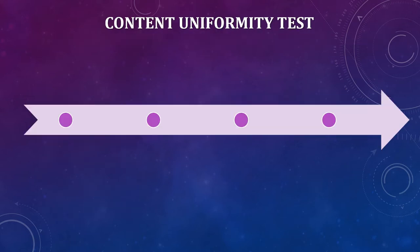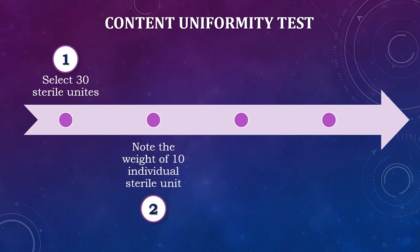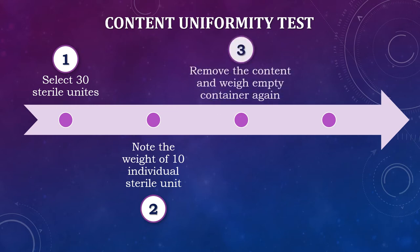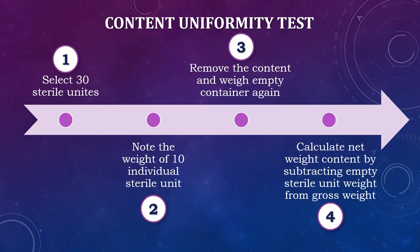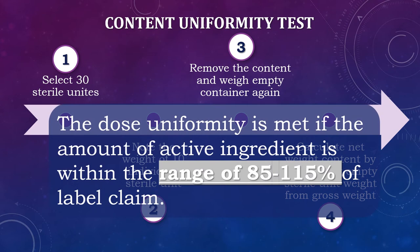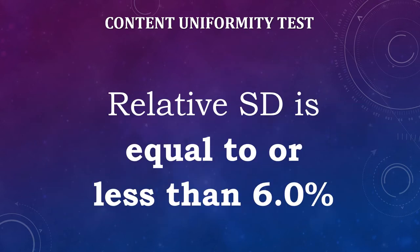The first test is the content uniformity test. A total of 30 sterile units are selected from each batch. The weight of 10 individual sterile units is noted, and the content is removed from them. The empty individual sterile unit is weighed accurately again. The net weight is calculated by subtracting the empty sterile unit weight from the gross weight. Dose uniformity is met if the amount of active ingredient is within the range of 85 to 115 percent of label claim and the relative standard deviation is equal to or less than 6%.